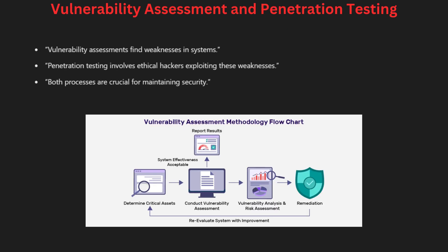A vulnerability assessment is the process of finding weaknesses in a system. Once weaknesses are identified, a penetration test — or pen test — is performed, where ethical hackers attempt to exploit those vulnerabilities to see how much damage could be done. Both assessments and pen tests are essential for maintaining secure systems, as they reveal potential weak points that can be patched to prevent future attacks.